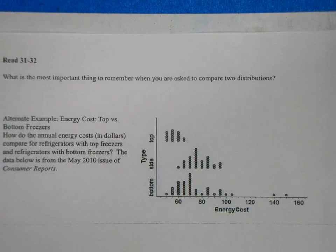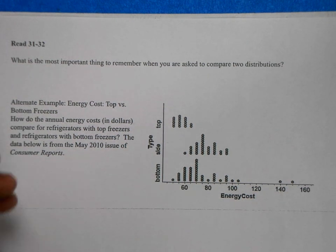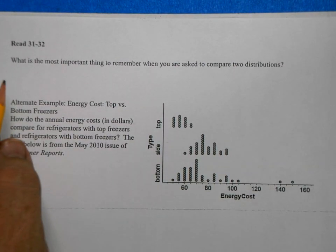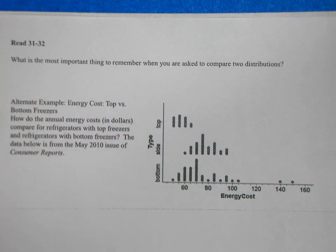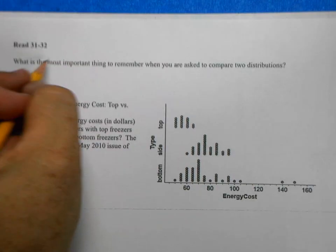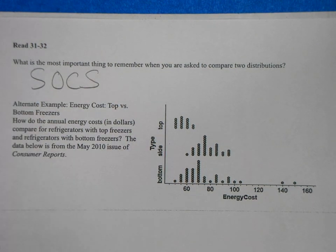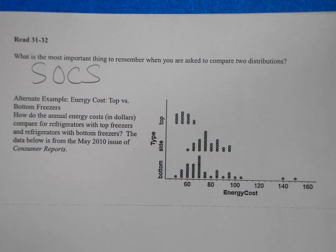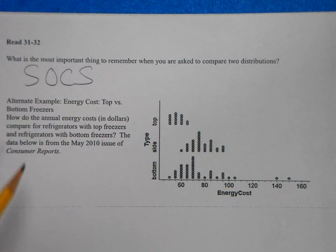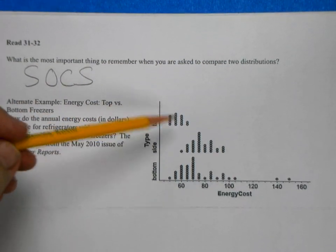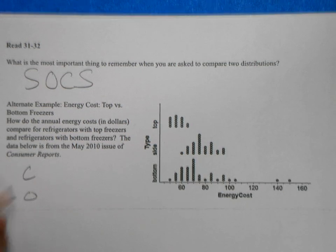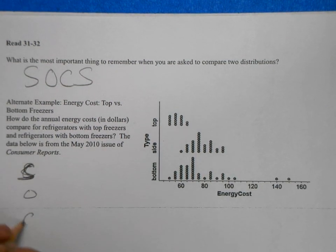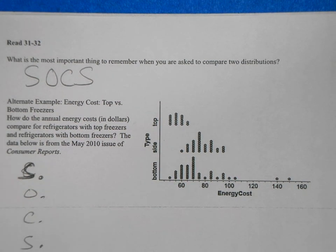Here we go, last page guys. So what I want you guys to do is, what is the most important thing to remember when you are asked to compare distributions? I will let you guys answer that on Dead Puzzle and remember it's that piece right there. So let's look at this. How do you compare the energy costs? So you would state, I'm not going to write it. The top freezer, the center. So you do like center, outlier, shape, outlier center spread. Don't forget shape, outlier center spread. So you would compare them.